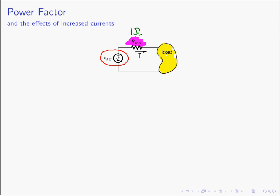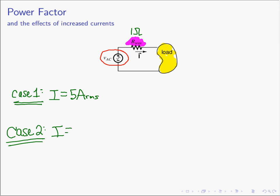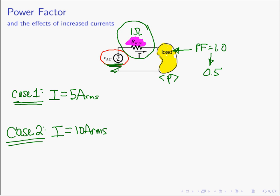Let's go back and look at what we had before. In case one, with unity power factor, the current was 5 amps RMS. In case two, when our load had a power factor of 0.5, the current had to increase to 10 amps RMS to maintain the same average power to our load. Notice that if we take our load and reduce the power factor from 1.0 down to 0.5, the utility generator and the distribution system have not changed. Let's look at what happens to the power in the wire.